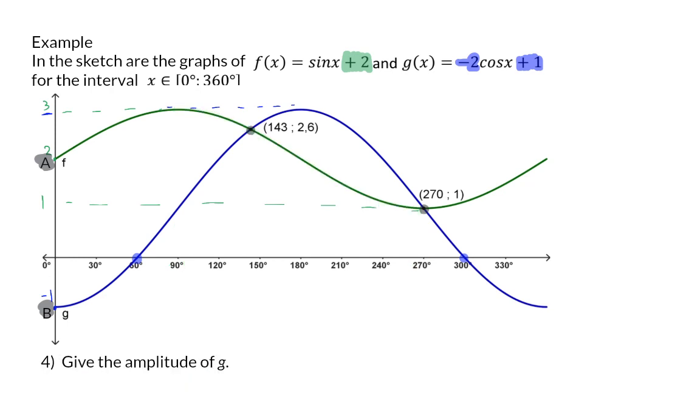Question 4: Give the amplitude of graph G. For the amplitude, we can simply have a look at the equation and know that the A value without the sign gives us the amplitude. That means that the amplitude of graph G will be 2.